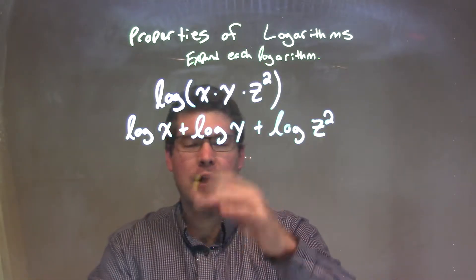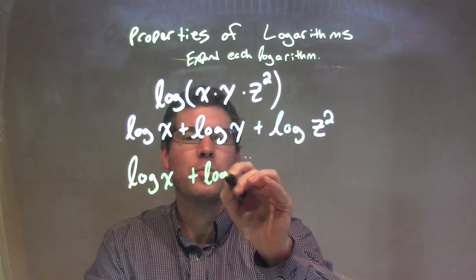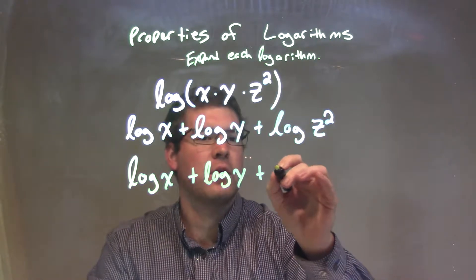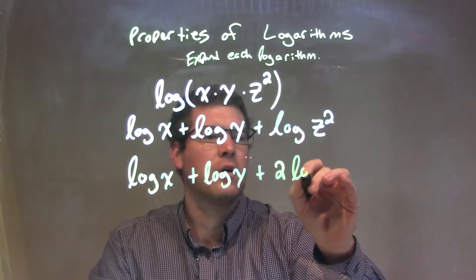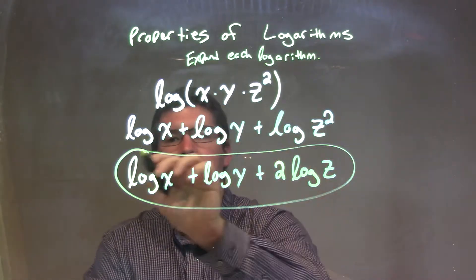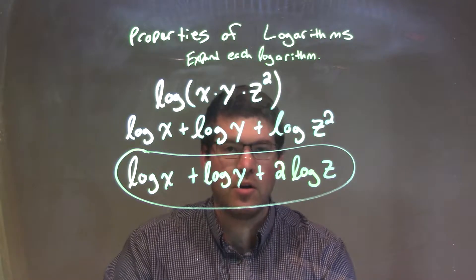When I rewrite this now with my final answer here, I have log of x plus log of y. I would bring those down, but I need to make sure that 2 comes out in front of the log. So 2 times the log of z, which is left, and there we have it. Our final answer here is just log of x plus log of y plus 2 log of z.